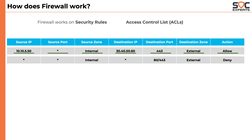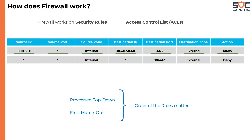One should keep in mind that rules are processed in a top-down approach and the rules are first-match-out, which means if one rule is matched, the appropriate action will be taken and the firewall stops processing further rules. Because of these two conditions, the order of the rules is very important.